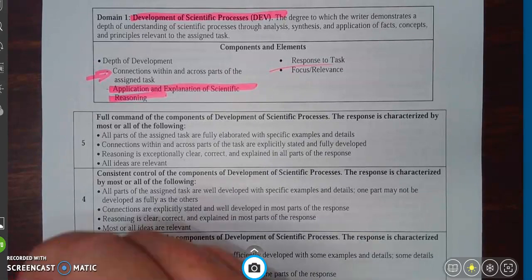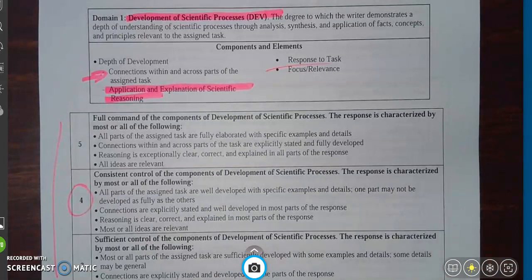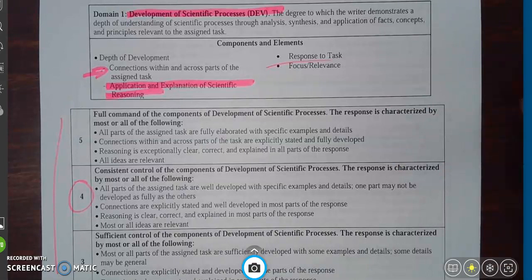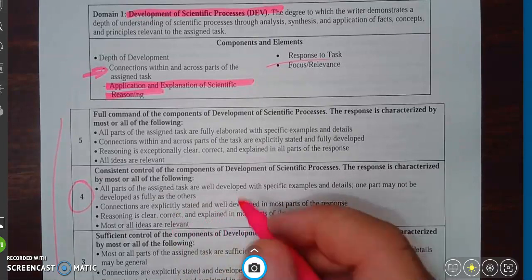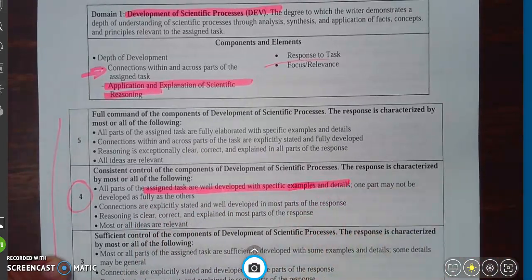So let's look at this for the idea here that we're getting into passing on this. Consistent control of the components, development of scientific processes. The response is characterized by most or all of the following. So you're going to have a well-developed response with specific examples and details.